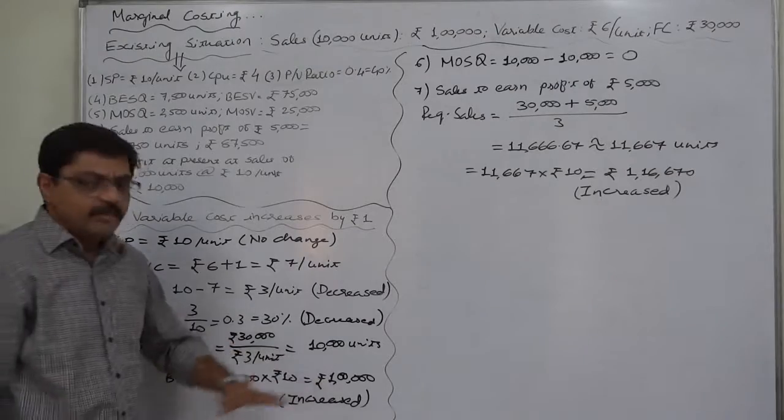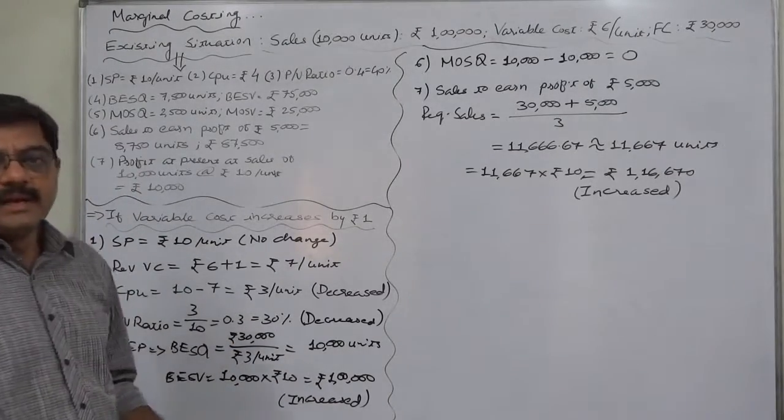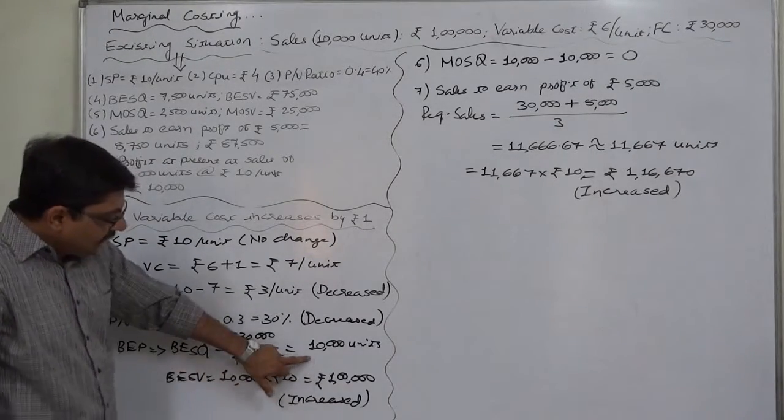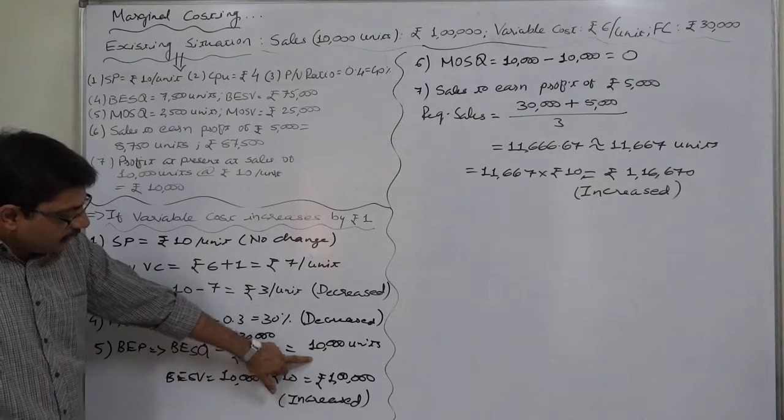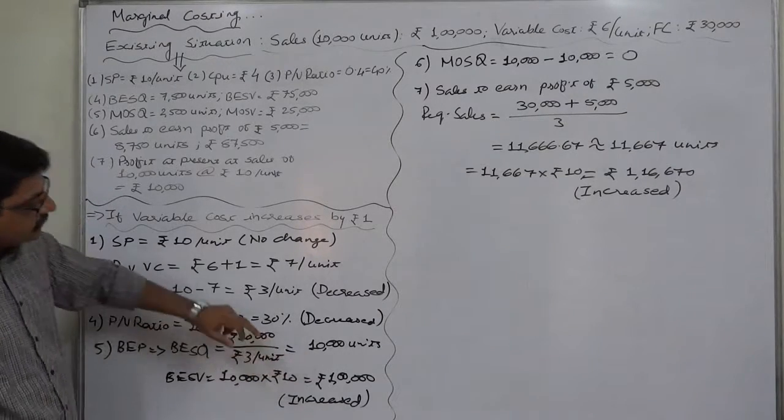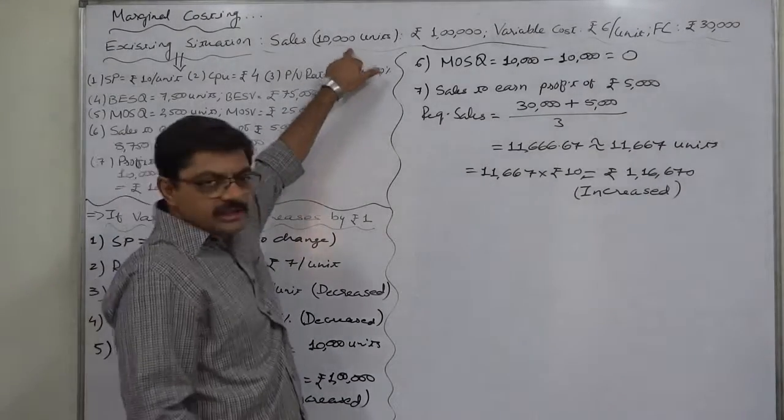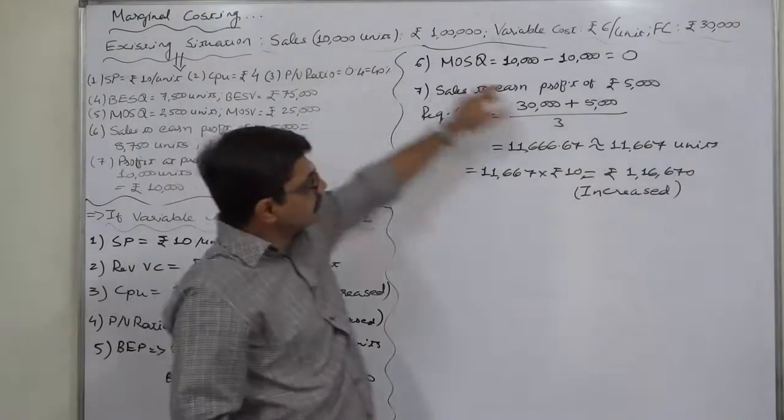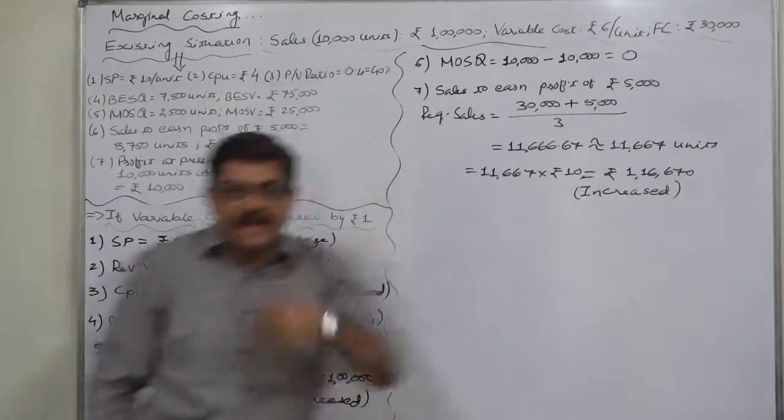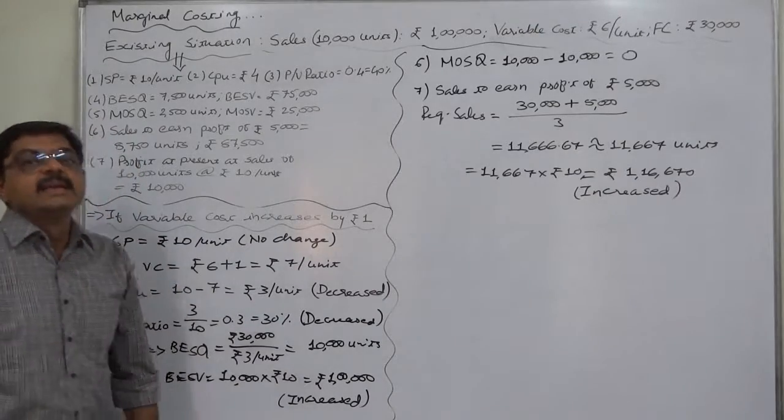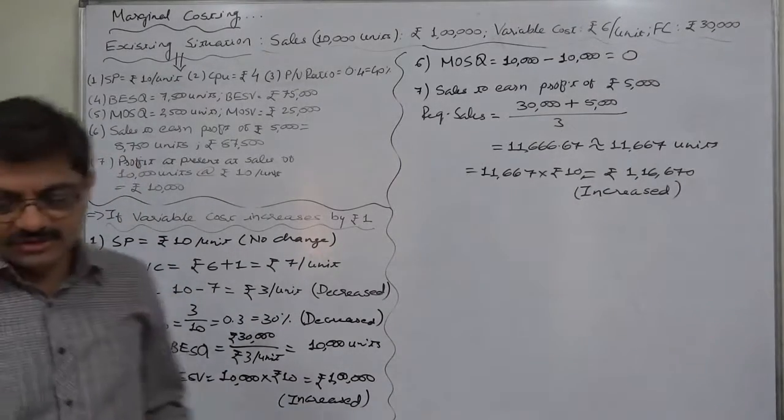We are aware that at breakeven point there will be neither profit nor loss. If the breakeven quantity is 10,000 units and our actual sales quantity is also 10,000 units, then margin of safety as well as the profit will be zero. That's it for now. Thank you very much.